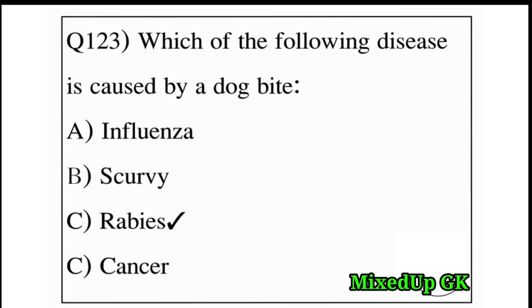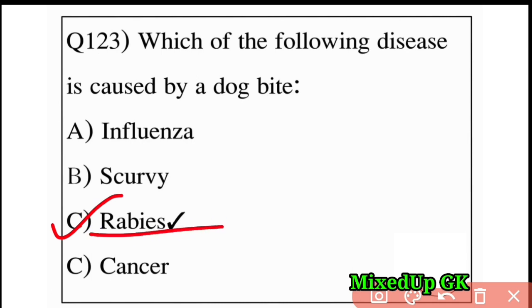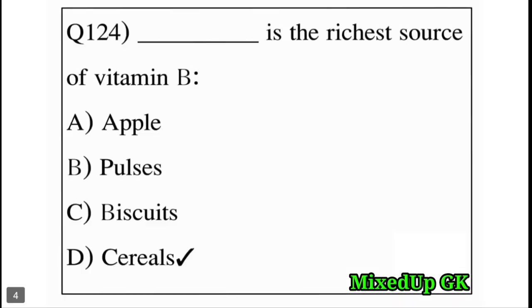Next question: which of the following diseases is caused by a dog bite? Option A: influenza, Option B: scurvy, Option C: rabies, Option D: cancer. The answer is Option C: rabies. A dog bite causes rabies.